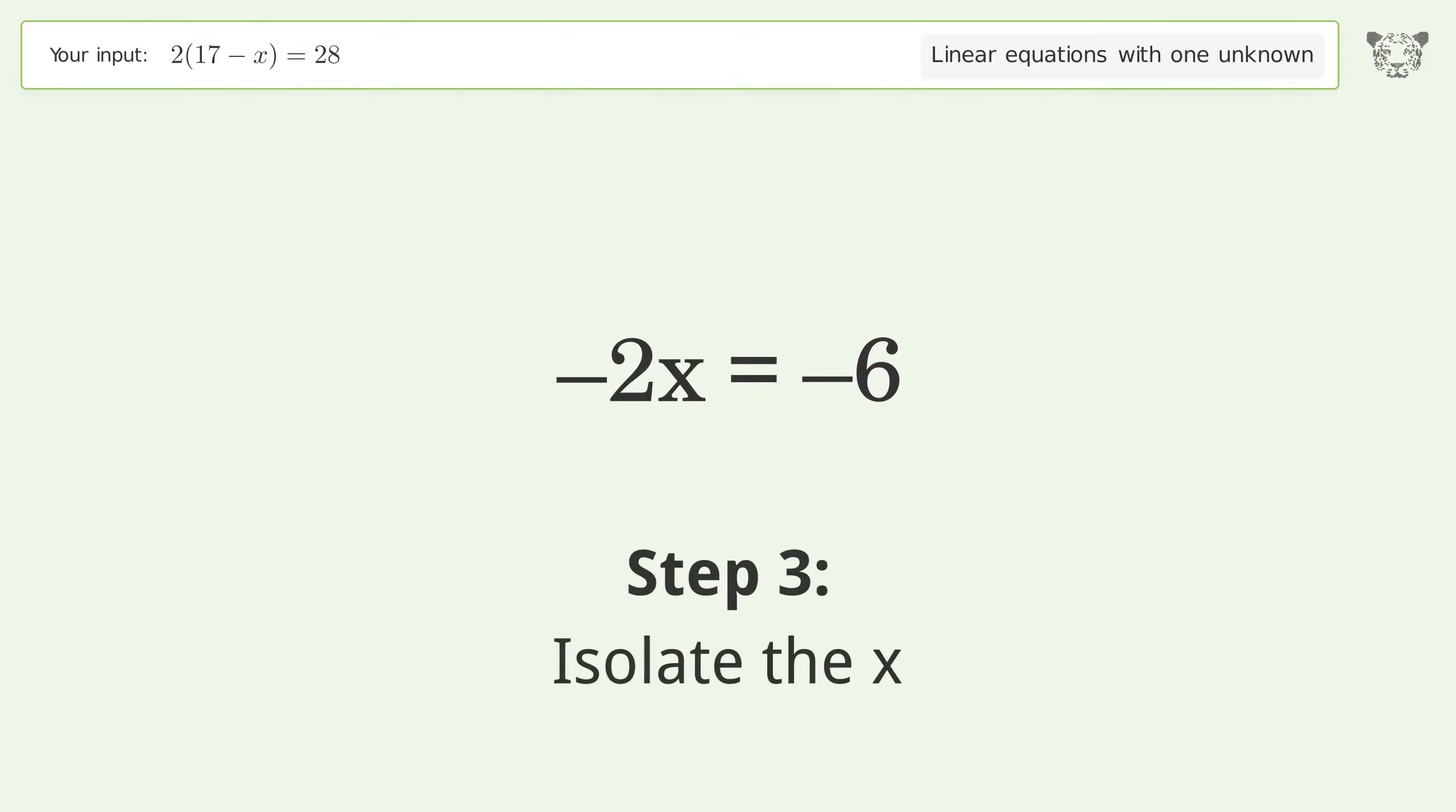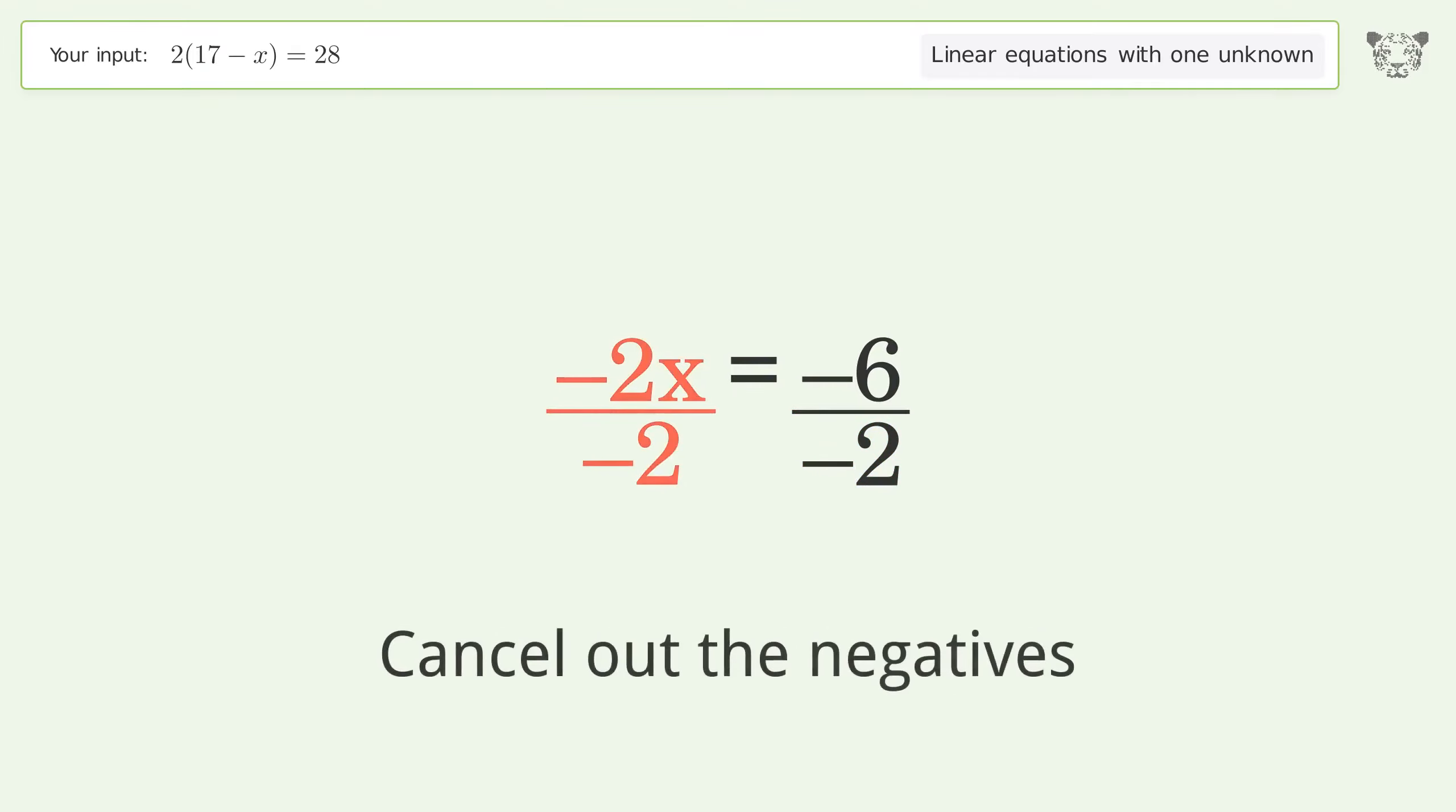Isolate the x. Divide both sides by negative 2. Cancel out the negatives. Simplify the fraction.